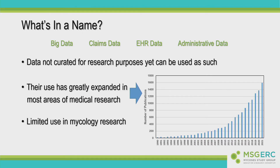These secondary data sources come in a variety — they're often referred to by a variety of different names: big data, claims data, EHR data, administrative data. It's basically data that's been curated and collected for other purposes but can be used for research.